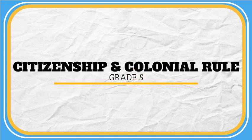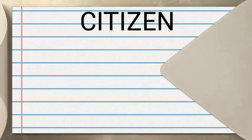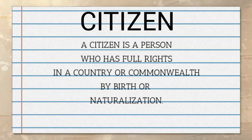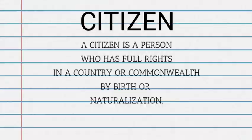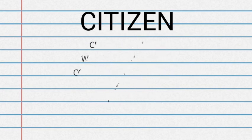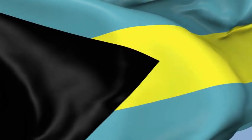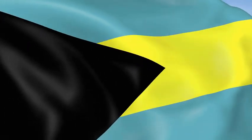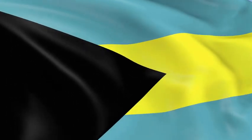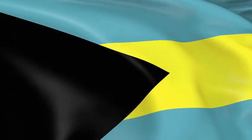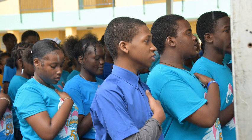Citizenship and Colonial Rule. A citizen is a person who has full rights in a country or a commonwealth by birth or naturalization. Citizens of the Bahamas have the patriotic responsibility to follow the laws in our Constitution.